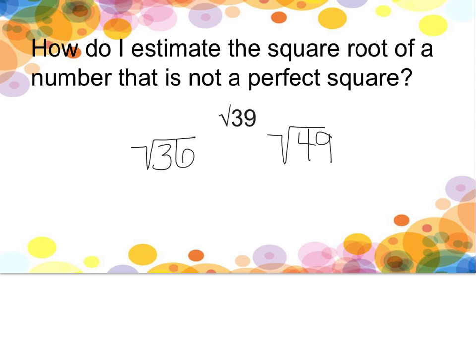And then we compared. 39 is only 3 away from 36, but it's 10 away from 49. Therefore, the square root of 39 is closer to 36, and we estimated that its value is about 6.